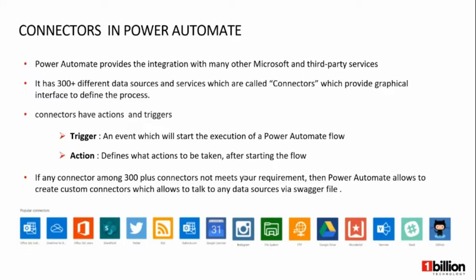But when it comes to Power Automate, two properties of connectors are really important: they are called triggers and actions. Triggers are the events which cause a Power Automate flow to start executing. Actions actually define what happens in the middle of the Power Automate flow.